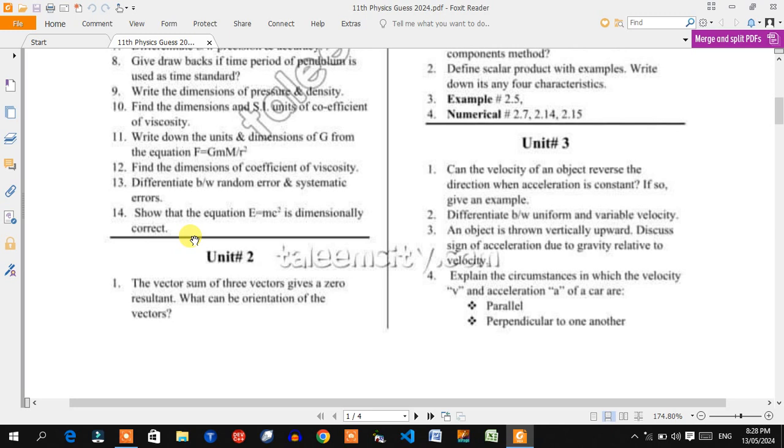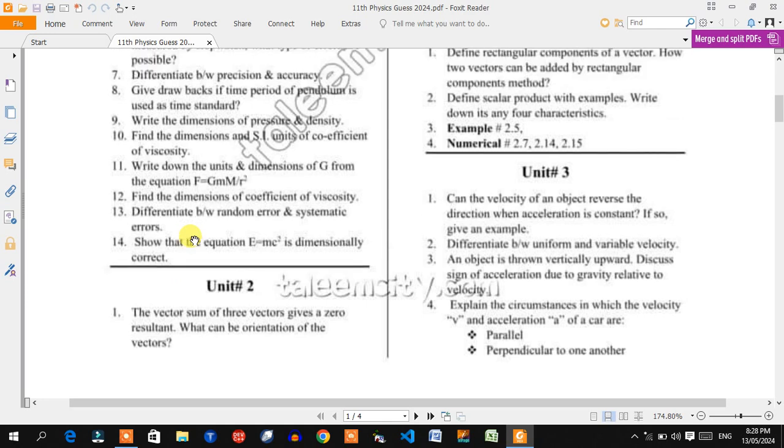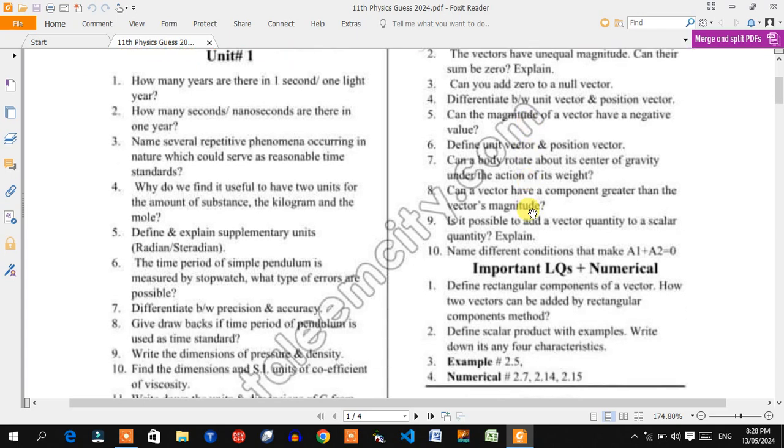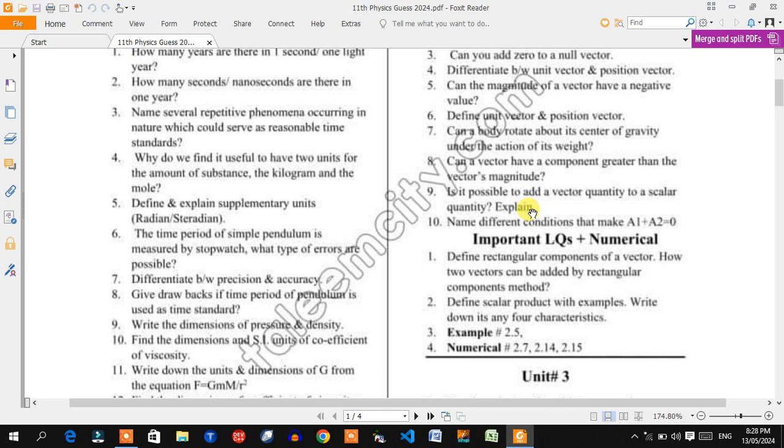These are short questions from chapter one. Chapter number two: the vector sum of vectors given zero, vectors of equal magnitude - can their sum be zero? Can you add zero to null vectors? Difference between unit vector and position vector. Can magnitude of a vector have negative value? Define unit vector. These are couple of short questions.